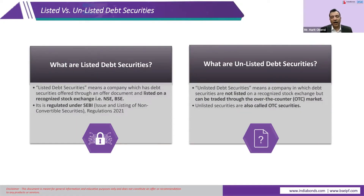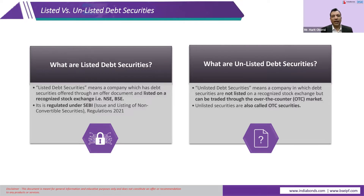The topic is listed and unlisted securities — how do we understand this? What is the difference? A listed security, as the name suggests, is a debt security, a bond or debenture that has been listed on a recognized stock exchange — NSE or BSE, or both exchanges.